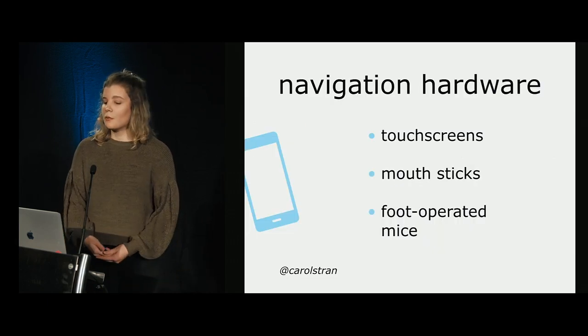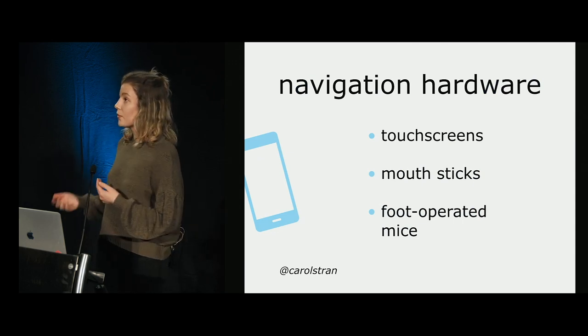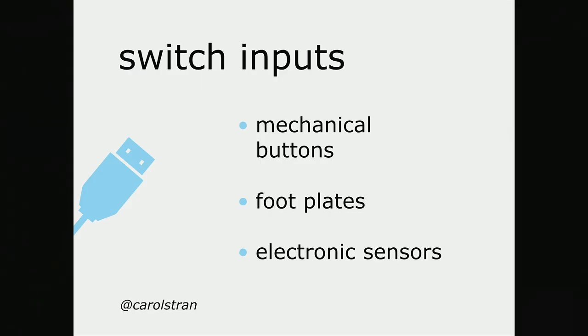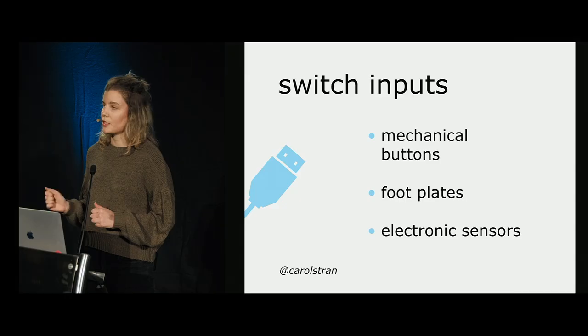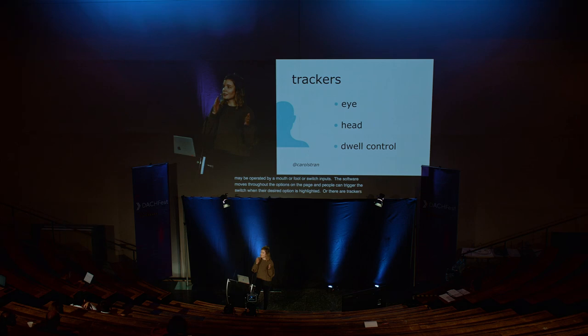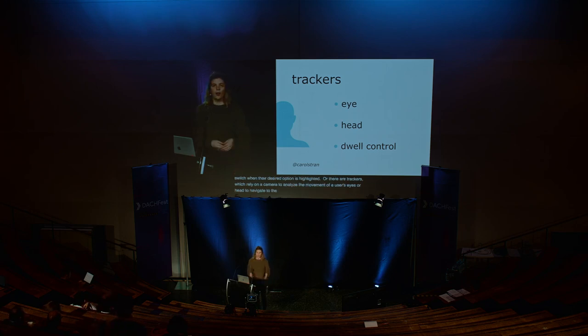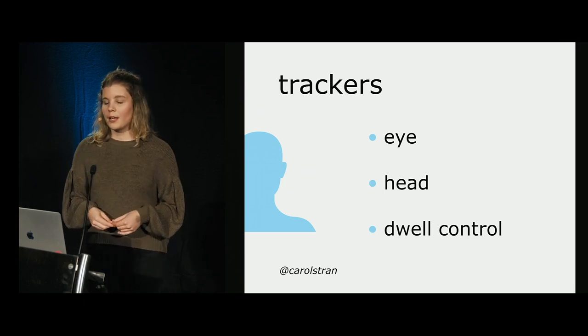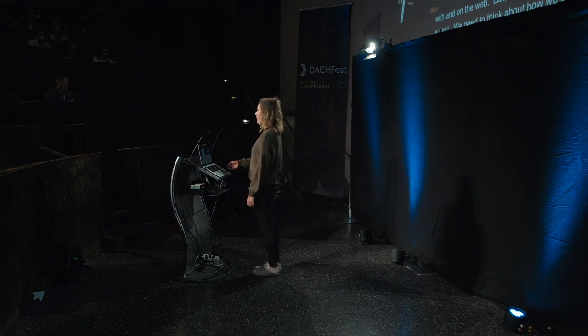While this talk is going to focus mostly on screen readers and keyboards, accessibility on the web isn't just limited to that. People have varying needs, and so we've created a diverse range of tools to match those needs. This includes navigation hardware operated by your mouth or foot, switch inputs where software moves through options and people trigger the switch, and trackers which rely on a camera to analyze eye or head movement. All of these technologies can help a wider range of humans engage with the web.